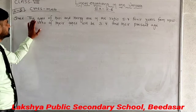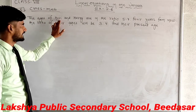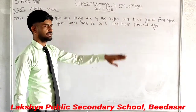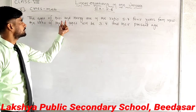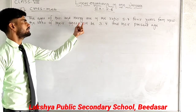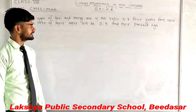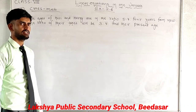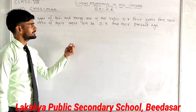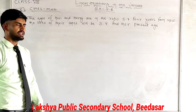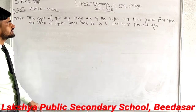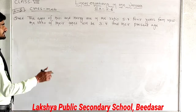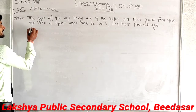The ages of Harry and Harry are in the ratio 5 to 7. When a ratio is given, we multiply by x to convert to actual values. Let Harry's age be 5x and Harry's age be 7x.